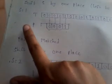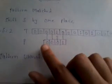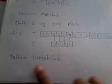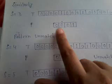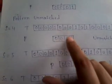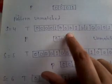We increment S to 2. At S equal to 2, 0 match with 0, 0 match with 0, but 0 does not match with 1, and 1 does not match with 0, so the pattern is unmatched. At S equal to 3, 0 match with 0, but 0 does not match with 1, and 1 does not match with 0 — two characters are unmatched, so the pattern is unmatched. At S equal to 4, 0 does not match with 1, 0 match with 0, 0 match with 0, 1 does not match with 0, so the pattern is unmatched.